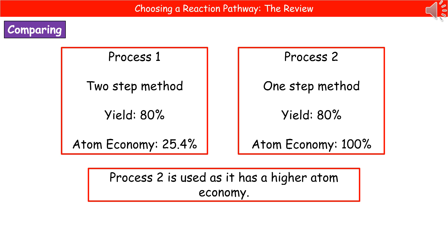Process one is a two-step method with a yield of 80% and an atom economy of 25.4%. Process two is a single-step method with a yield of 80% and an atom economy of 100%. In this case we'd select process two because it has a higher atom economy. And the key thing to remember when comparing two things in any science question is to use comparative terms.